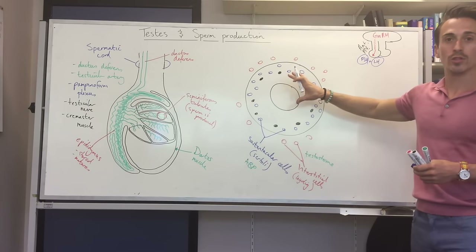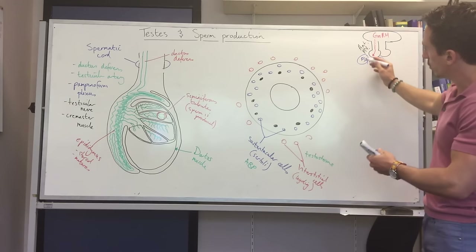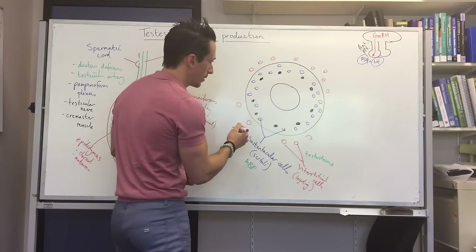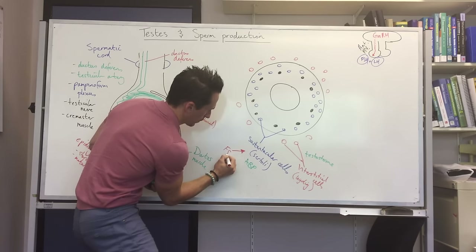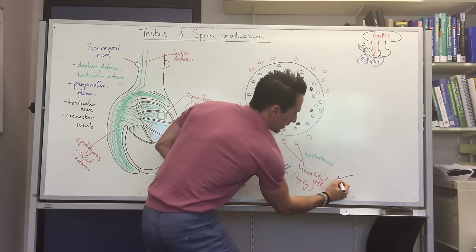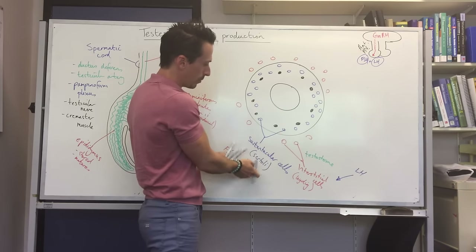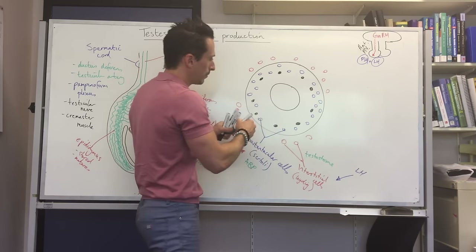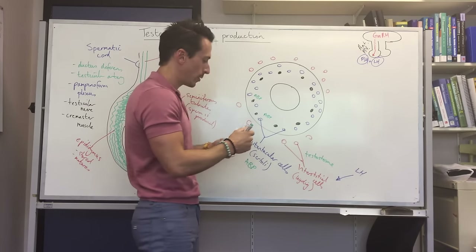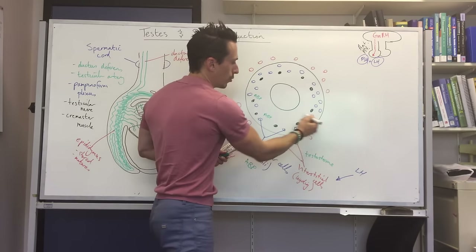When a male reaches puberty, FSH travels to the Sertoli cells and stimulates them, while luteinizing hormone travels to the Leydig cells and stimulates them. The stimulated Sertoli cells release ABP into the walls of the seminiferous tubules, and the stimulated Leydig cells in the interstitium produce testosterone, which also moves in.